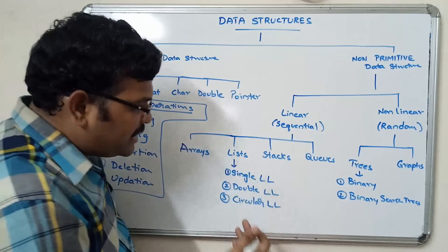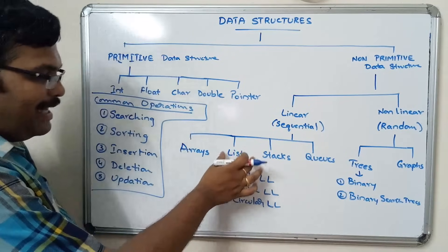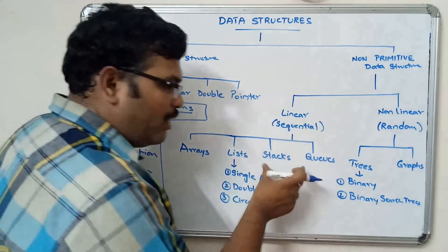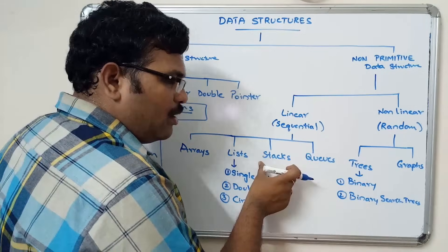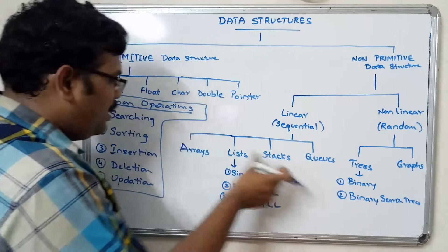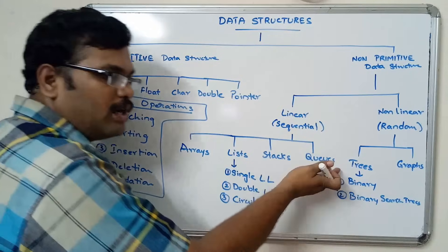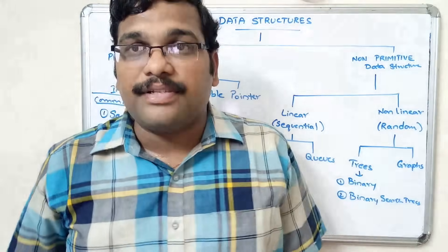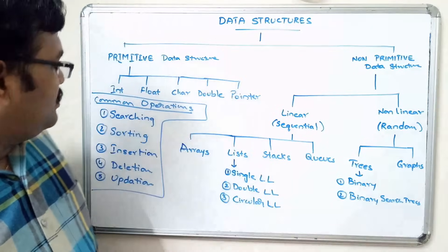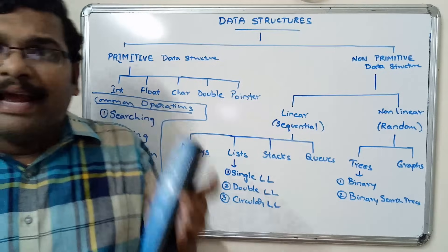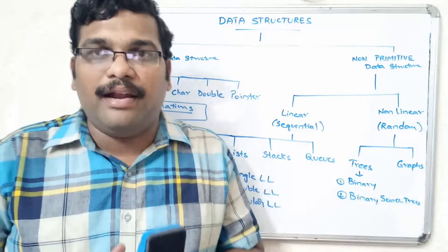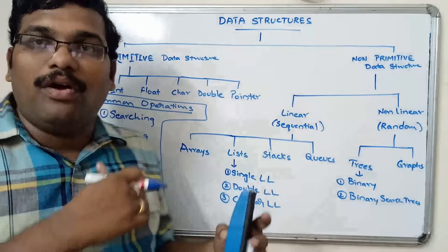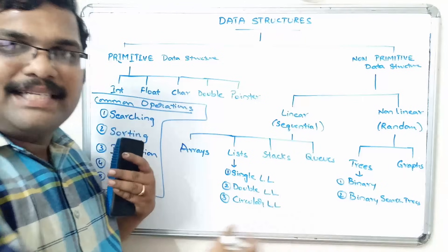We are going to discuss the list and apply all these operations, then see stacks and apply all operations, then cover queues, and similarly trees and graphs. From the next session we will start with arrays. Arrays have already been seen in C, so we will see the advantages and disadvantages of arrays, and then move on to linked lists and all these concepts in the coming sessions.